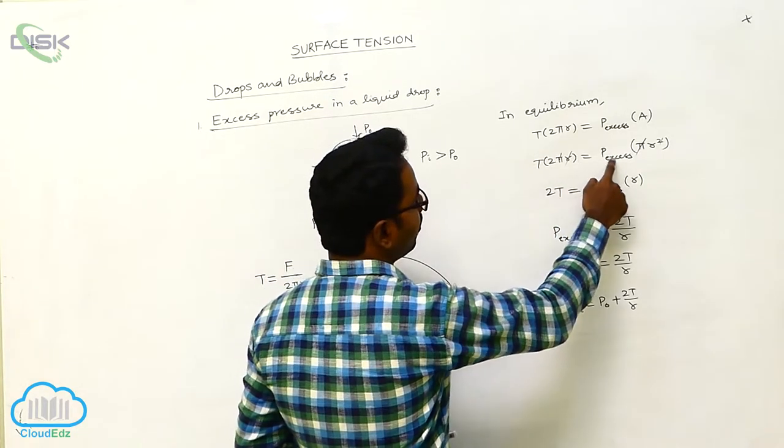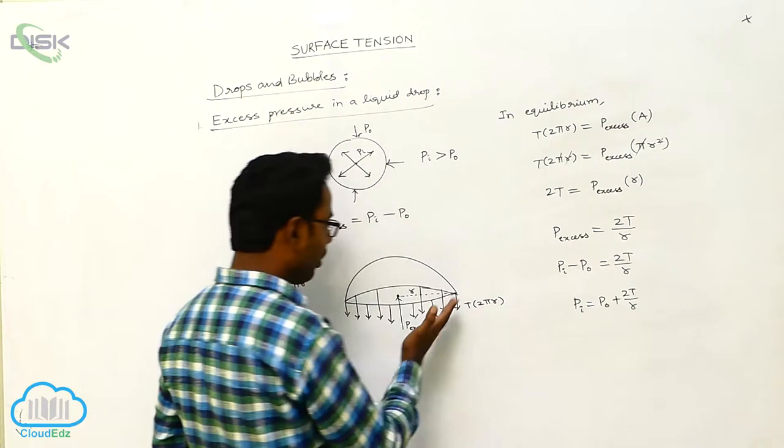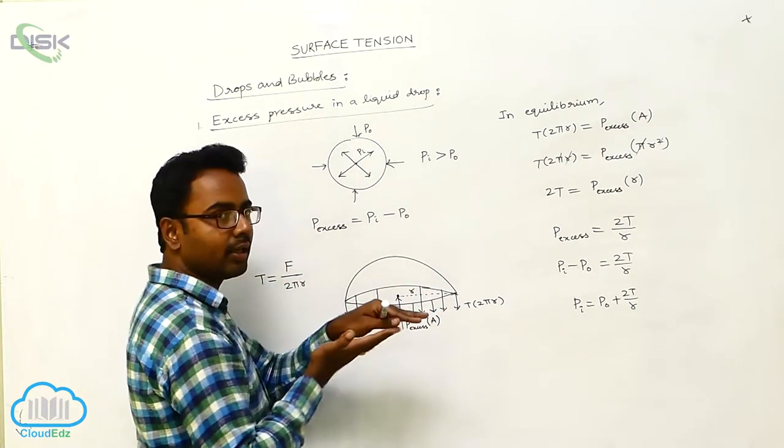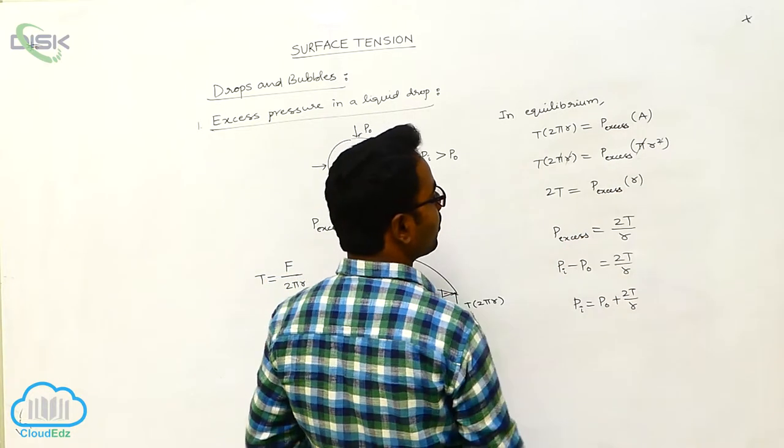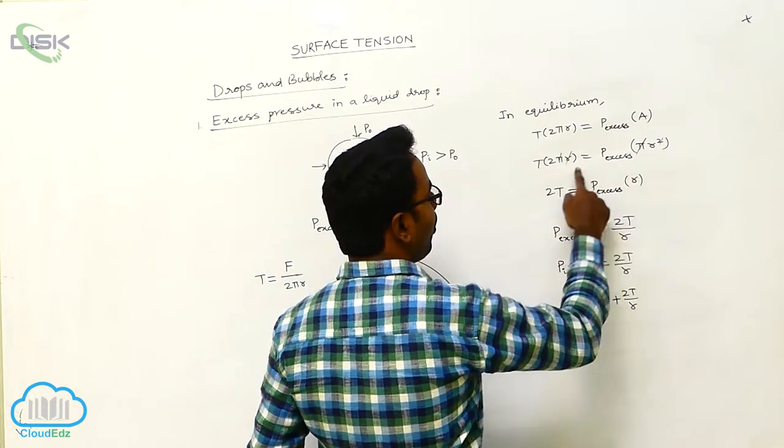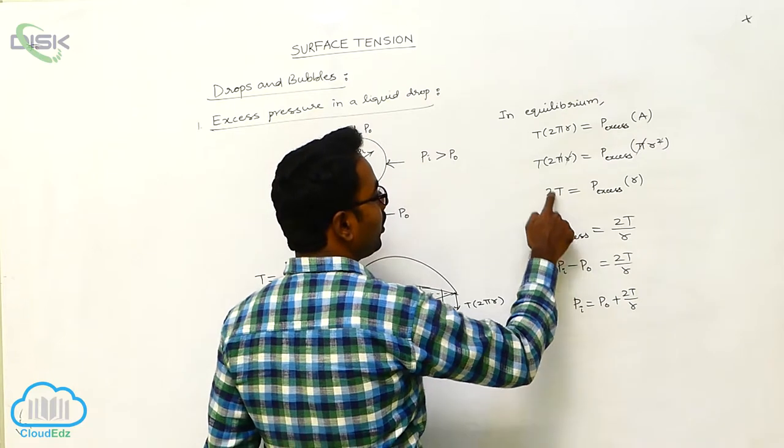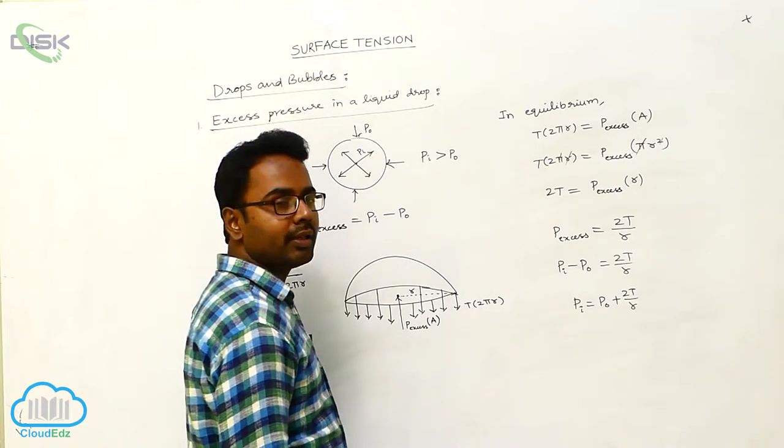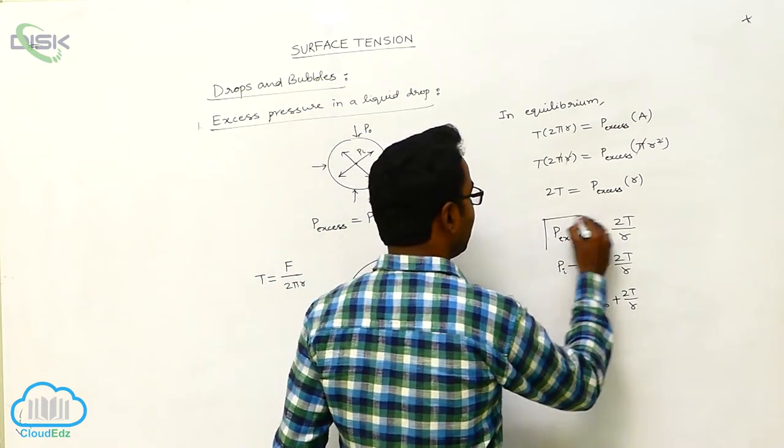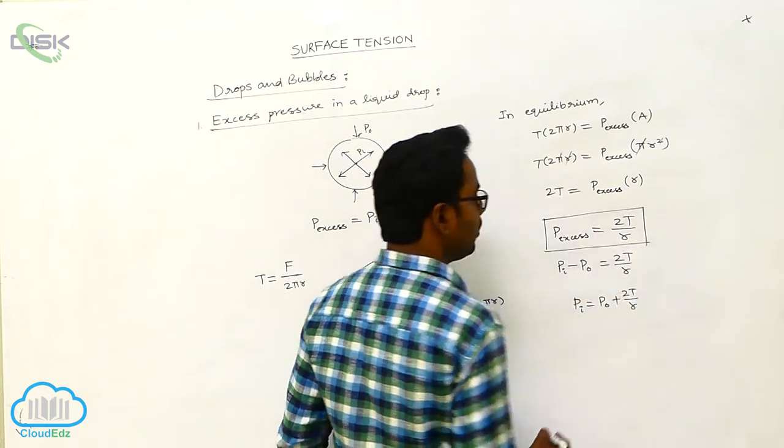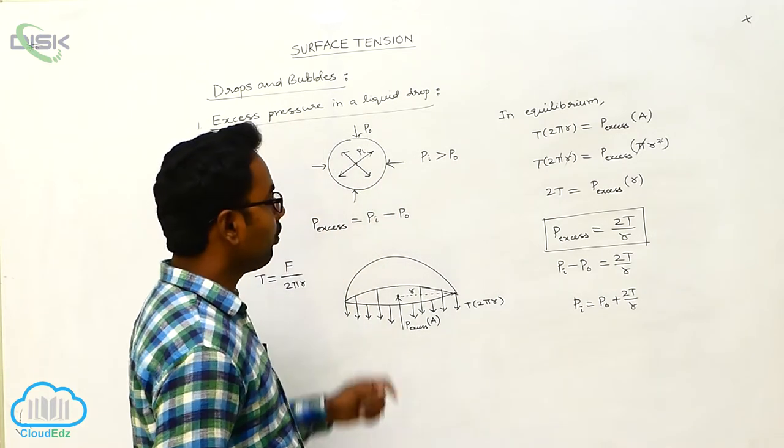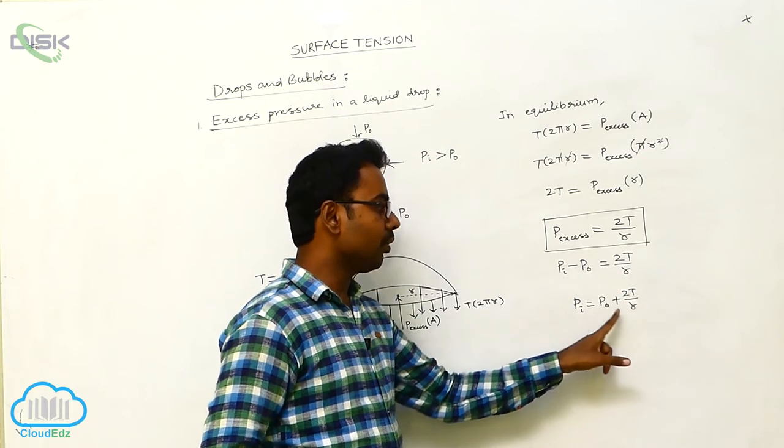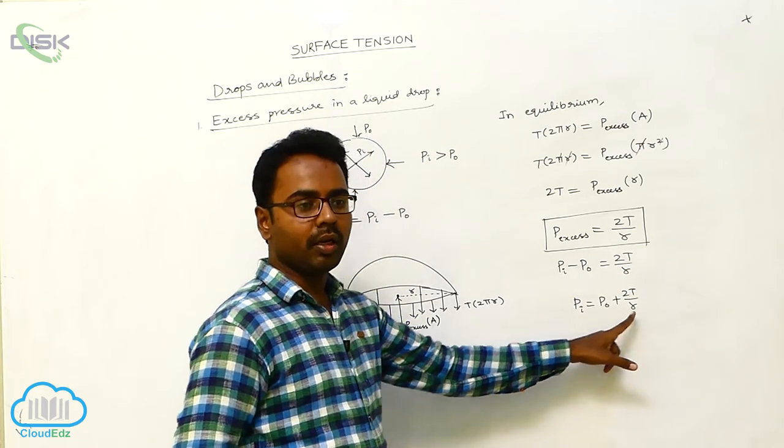Now T into 2πr is equal to Px into A. The area is πr². So Px is equal to 2T by r, which is the formula for excess pressure in a liquid drop. Px can also be written as Pi minus P0 equals 2T by r.